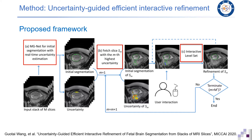This figure shows the proposed framework. From an input stack of 2D slices, we use a novel network called MGNet to obtain the initial segmentation and the uncertainty information for every slice. Then we fetch the slice with the highest uncertainty and present it to the user to ask for interactions. The user interactions are combined with a level set to obtain the refined result. Then we fetch the next slice with the highest uncertainty, and the procedure terminates when no more slices are suggested by our method.